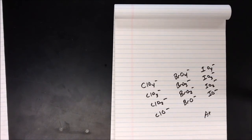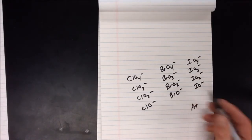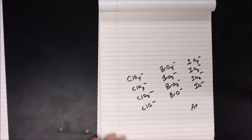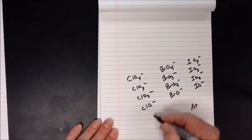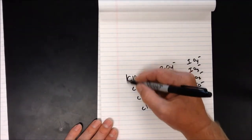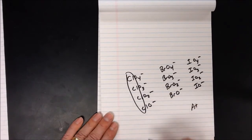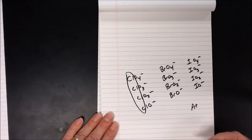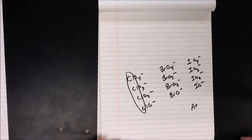Notice that fluorine is not included in this list. In all of these polyatomic ions, oxygen is more electronegative, so the halogen takes on different charges. Fluorine is more electronegative than oxygen and does not follow the same pattern, so we don't have fluorine-based polyatomic ions of this type.